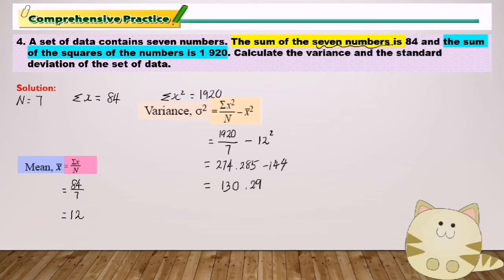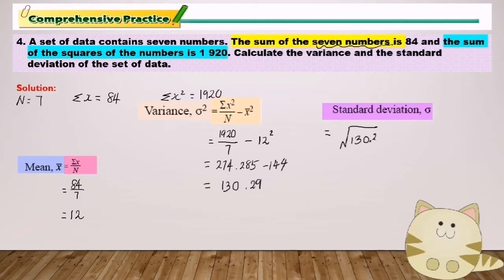After we find the variance, we find the standard deviation. As you know, standard deviation is the square root of variance. Standard deviation equals square root of 130.29 equals 11.41.